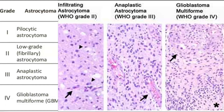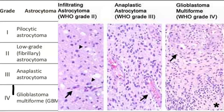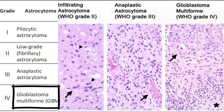Grade three is anaplastic astrocytoma. Grade four is glioblastoma multiforme — it is the most malignant primary brain tumour and the most invasive. It can spread to other parts of the brain and can become very large.